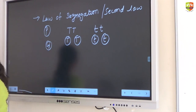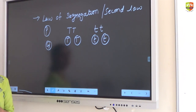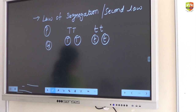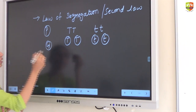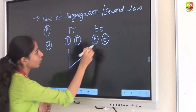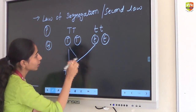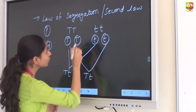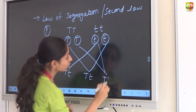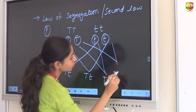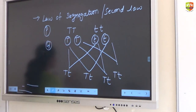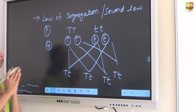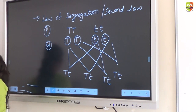This law of segregation is also called purity of gametes — it determines the purity of gametes. Each allele will have its independence; it will not mix up with the other allele. It will independently segregate. They are not mixing up; they are segregating separately. Both alleles will not mix up. They will segregate independently. That is the law of segregation.